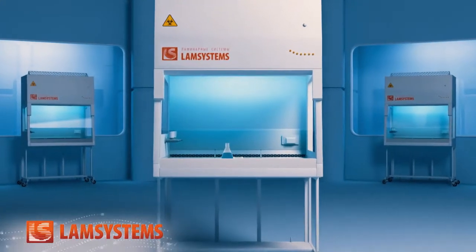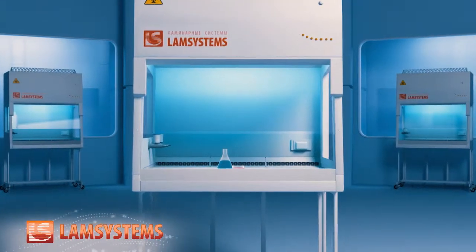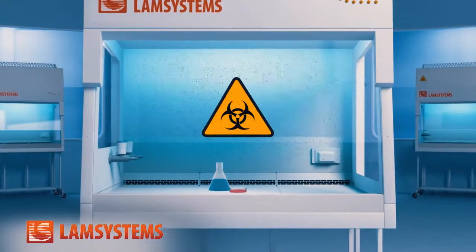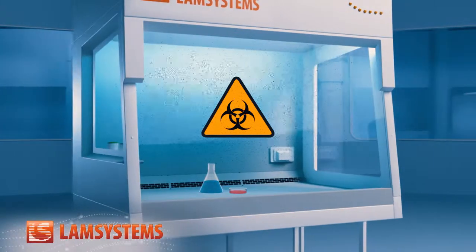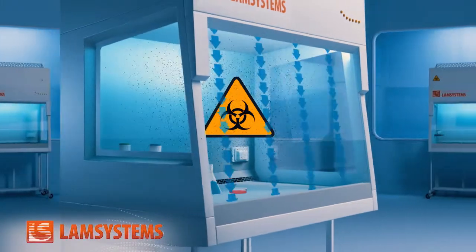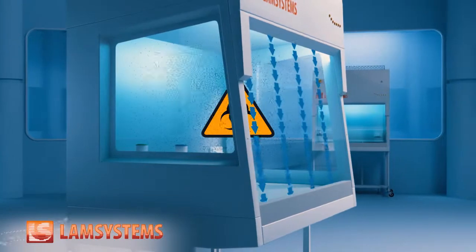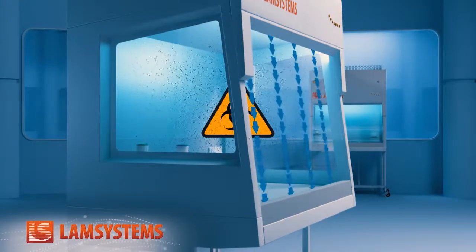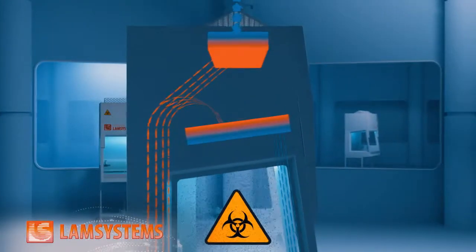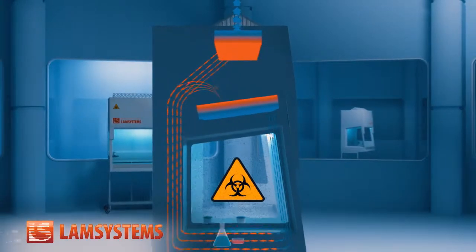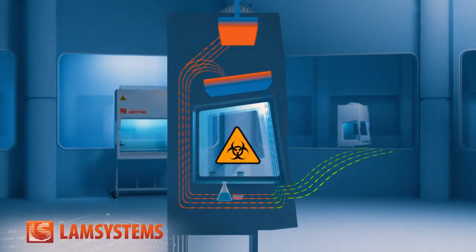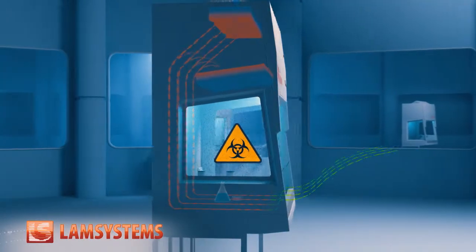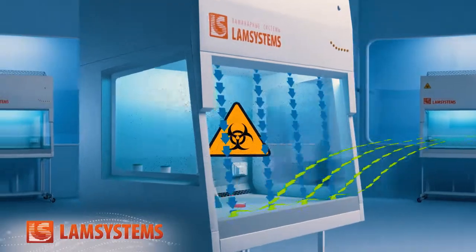One of the most important factors in the level of protection of a microbiological safety cabinet lies in its ability to contain hazardous microorganisms through the use of an air curtain. But how to verify that the airflow rendered is truly a reliable barrier from pathogenic agents and microorganisms? Will it really prevent the outbreak of the microbes of dangerous diseases into the external environment?